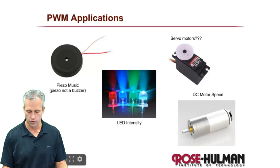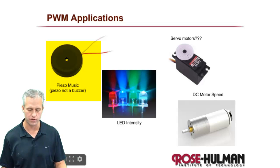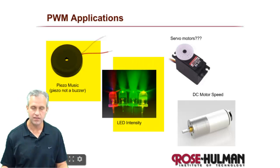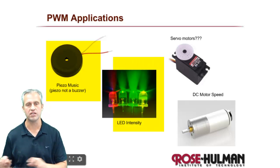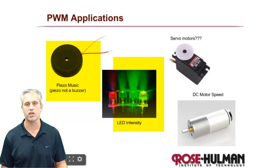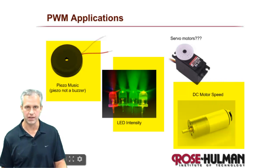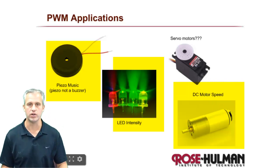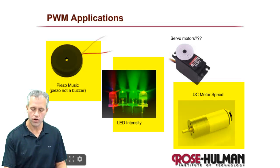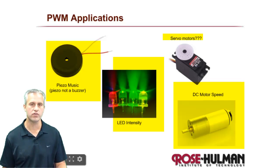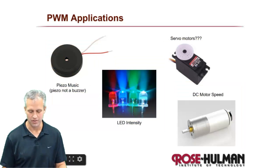Some of the ones that we're going to focus on is obviously the piezo because we use it for music. Light intensity, so you can actually adjust the intensity of an LED. Not something you'd use a lot, but it's easy to show on our green board, so we're going to make a demo there. The big one that people use it for is actually motor speed. That's the real reason that PWM exists. And then we're also going to talk about could you use it for servos? So let's go ahead and kind of talk about those four.